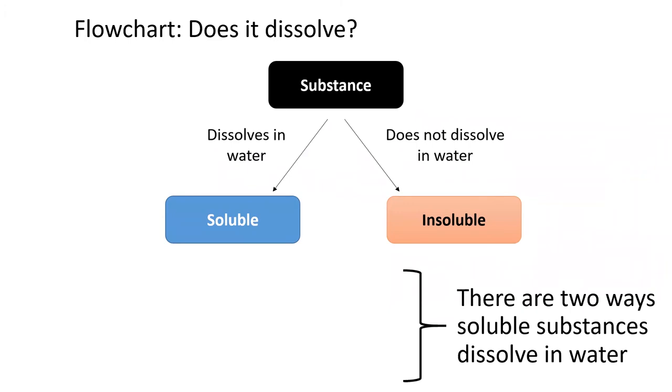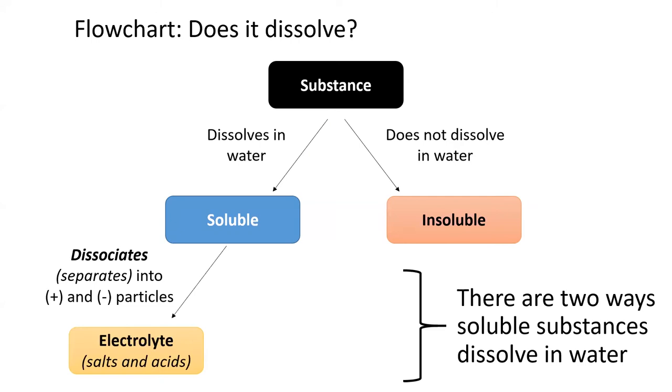There are two ways that soluble substances can dissolve in water, and these two ways make a big difference to their chemistry. If the substance separates into cations and anions, then it forms an electrolyte solution. This is the way salts and acids dissolve in water.